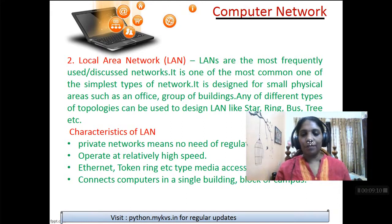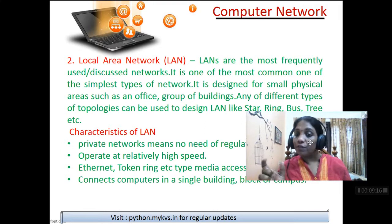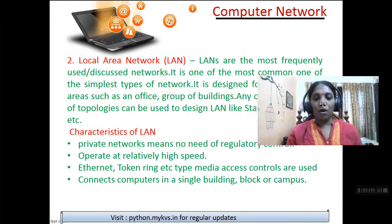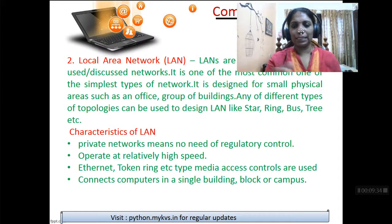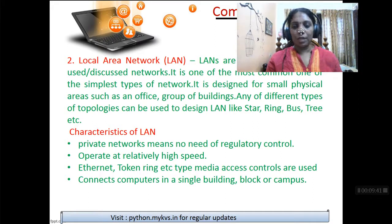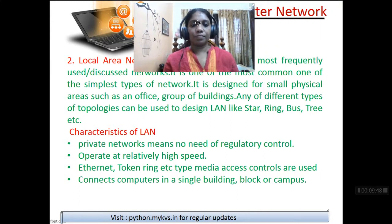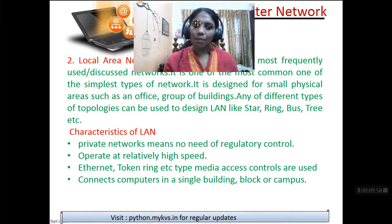LAN is a type of network designed for small physical or geographical areas. LAN is a type of network which is confined to a small geographical area, such as an office, a group of buildings, a school, a hospital, or a bank. That is enough — you don't have to say more. The area covered is spread across one kilometer maximum. Beyond that, you should think about connecting two, three, or four different LANs together, and that becomes the next type.